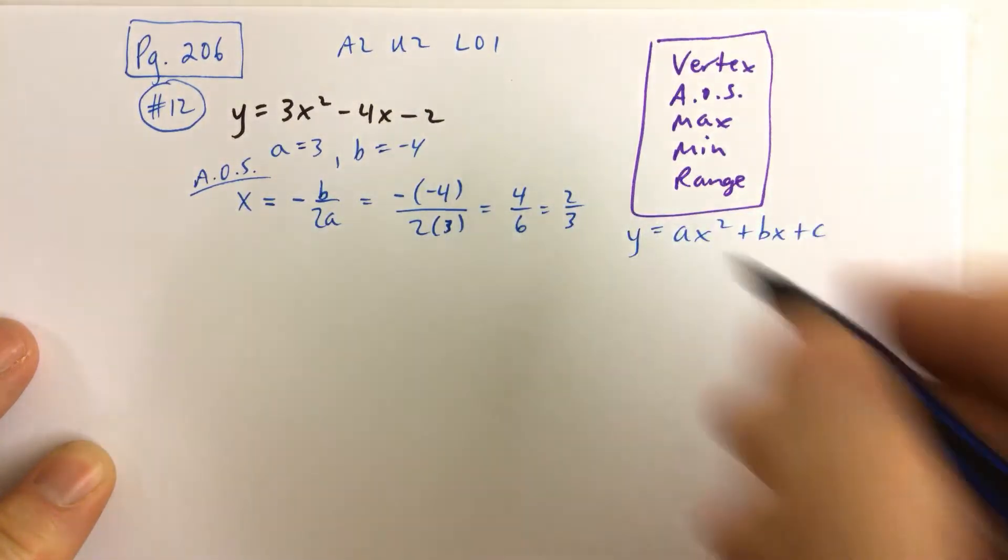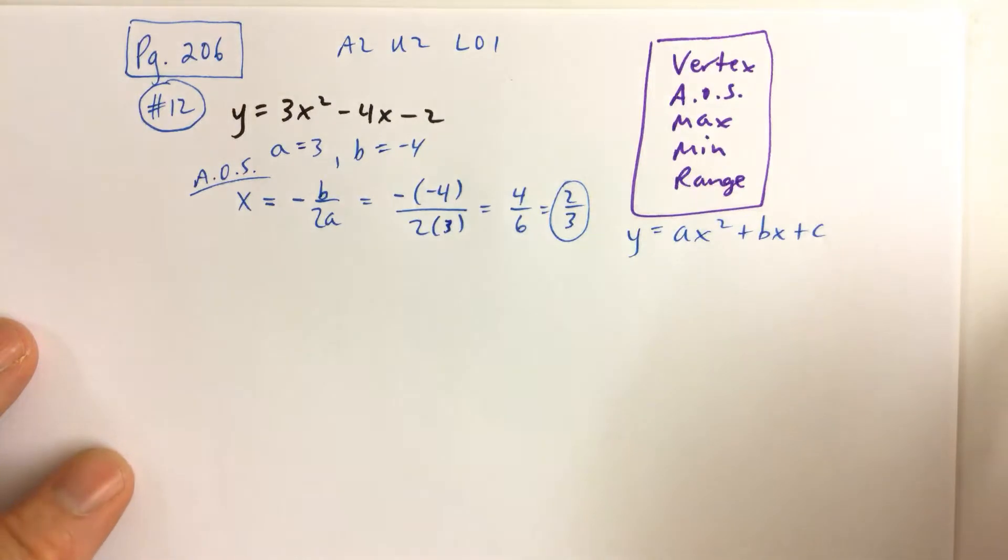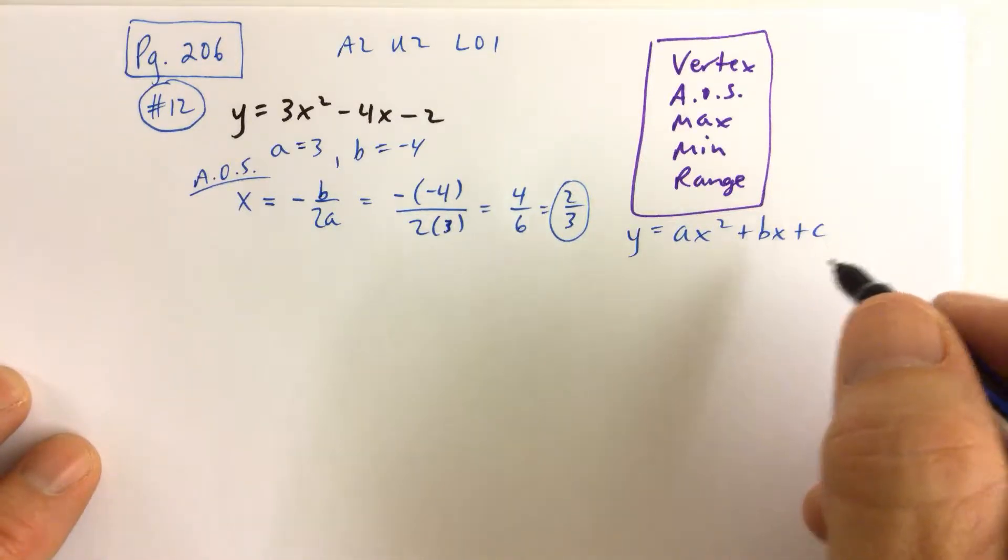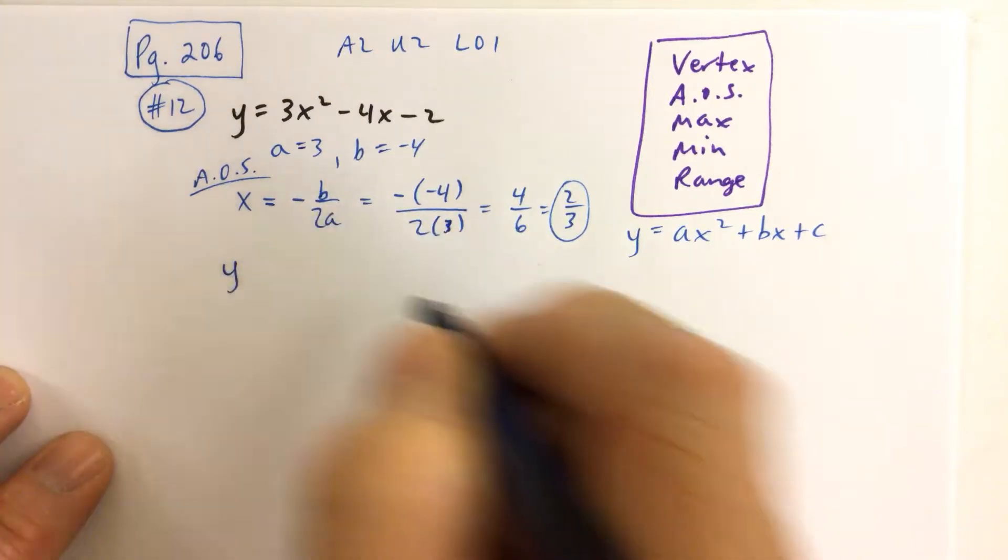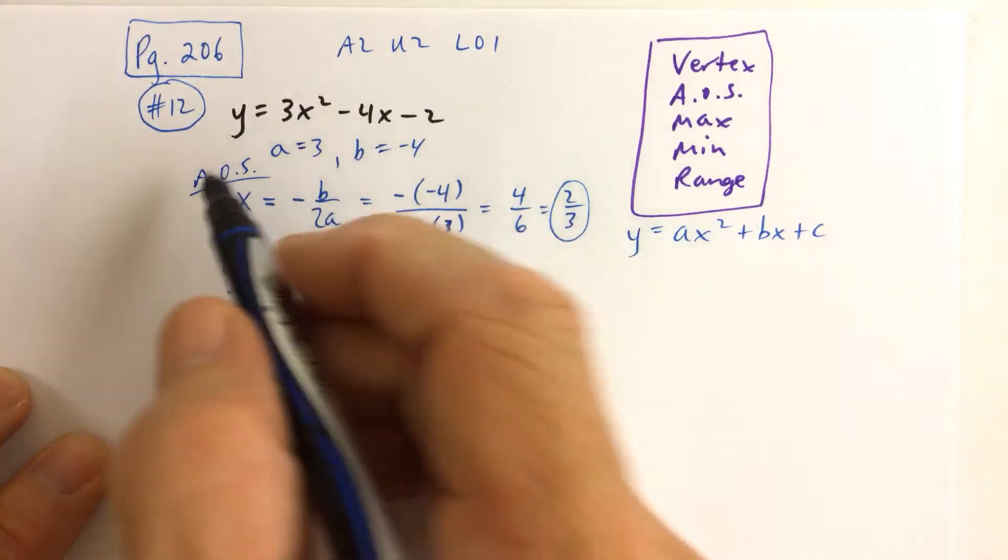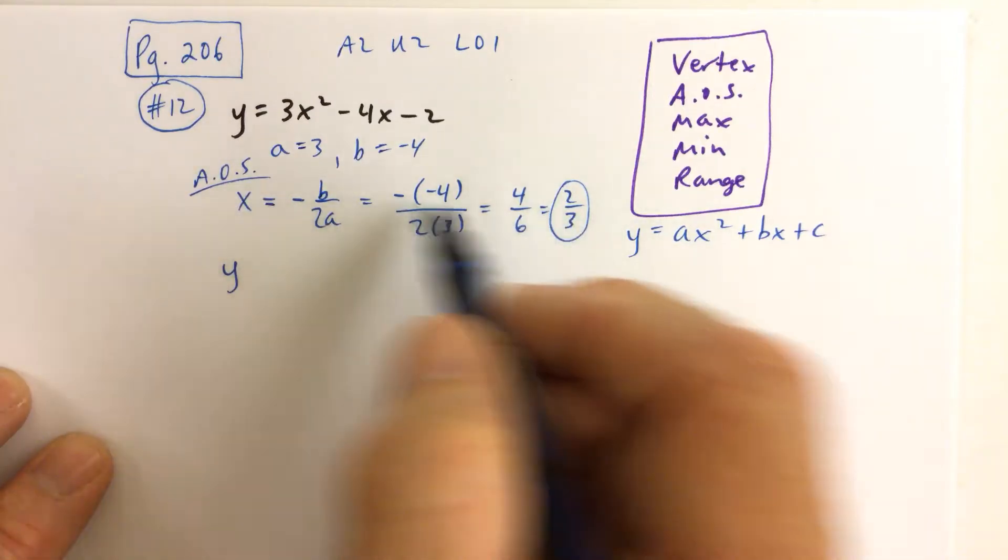Well, 4 sixths is the same as 2 thirds. So we don't always like when we get fractions for our x, because then we have to put that fraction back in. But we can do that in order to find the y-coordinate of the vertex. By the way, the axis of symmetry, x equals 2 thirds, is the equation for the axis of symmetry.